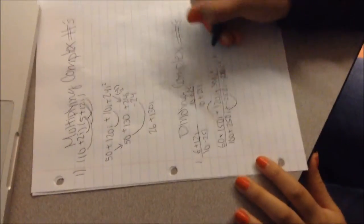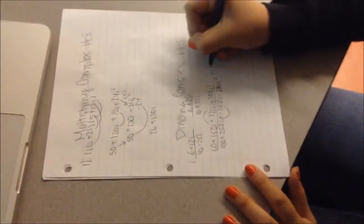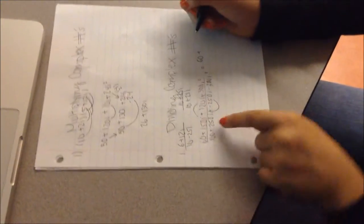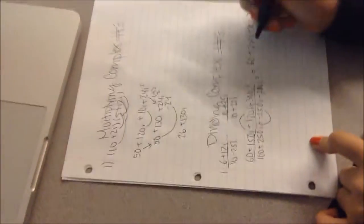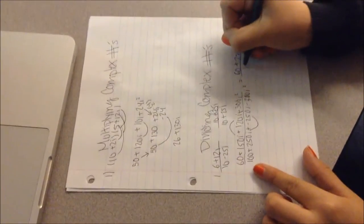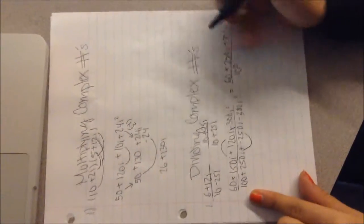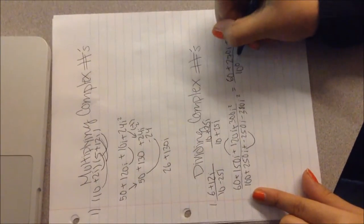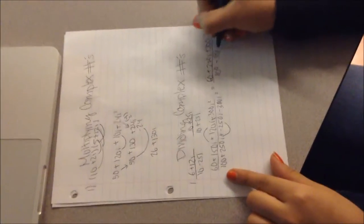So this equation, the numerator would become 60 plus this combined is 270i plus 300i squared. Now over here it'd be 100. Since 250i minus 250i would cancel out, you'll just go ahead and put negative 625i squared.